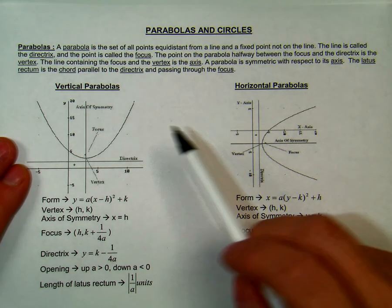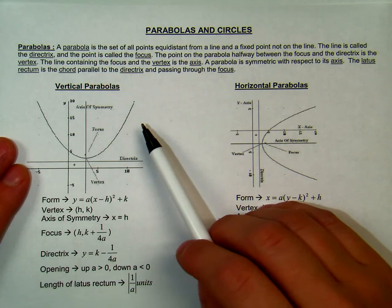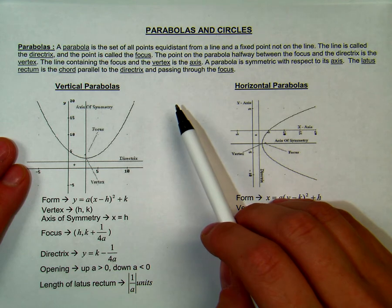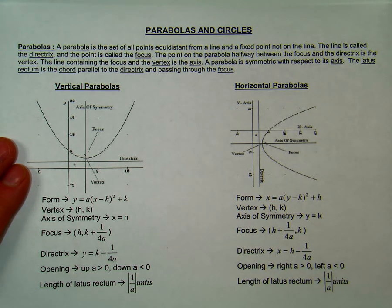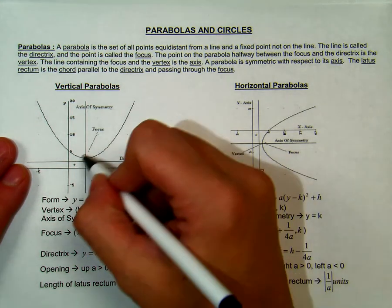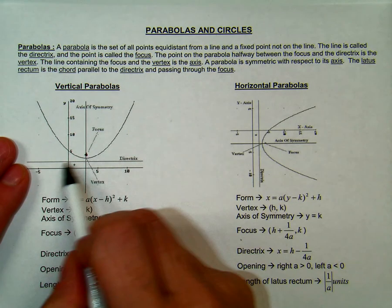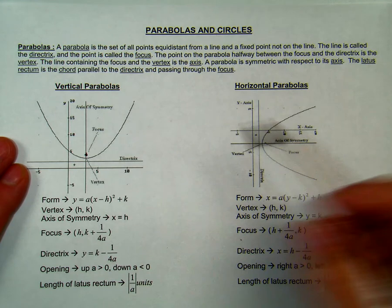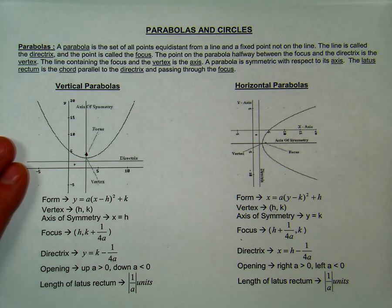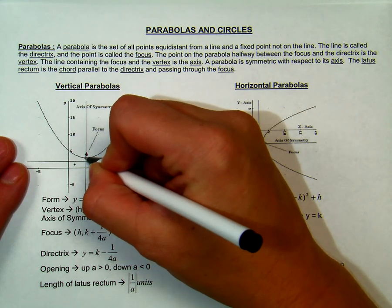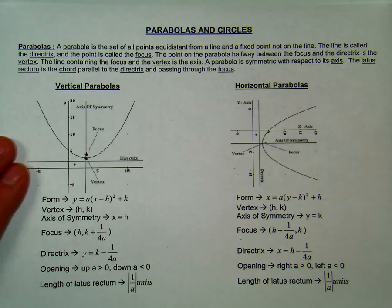Parabolas and circles. A parabola is a set of all points equal distance from a line and a fixed point not on the line. The line is called the directrix and the point is called the focus. If you look at this picture, the focus would be a point about right here and the directrix is this line drawn here. The point on the parabola halfway between the focus and the directrix is called the vertex. The vertex is actually on the parabola — it's either the lowest or highest point of the parabola.